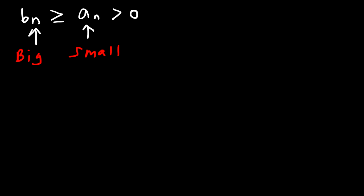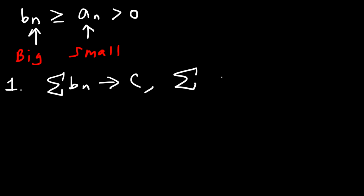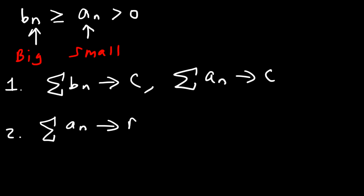The basic idea behind the direct comparison test says this — the first statement: if the big series converges, then the small series will converge as well. And the second statement: if the small series diverges, then the big series diverges as well.